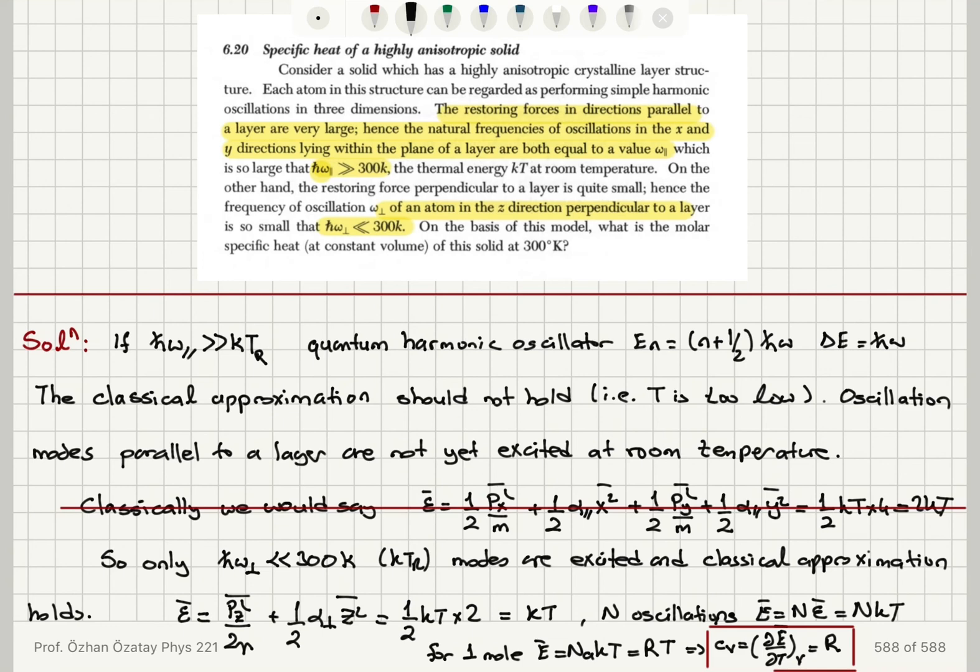we can only talk about oscillations perpendicular to the layer. In which case, we have room temperature kTr much greater than h-bar omega. The alpha value or the restoring force is small in this case, and these modes are excited. And with that, we have only a one-dimensional oscillation on the z-axis that gives us a mean energy per oscillator kT, for n oscillators nkT, for one mole RT, and molar specific heat would be equal to R.